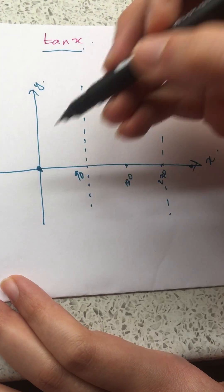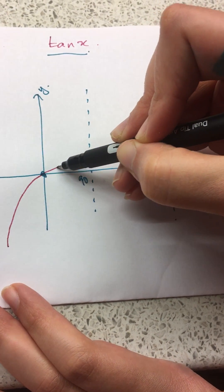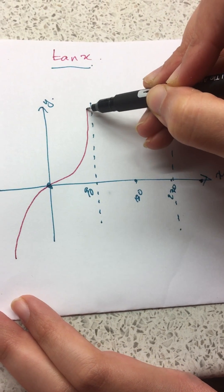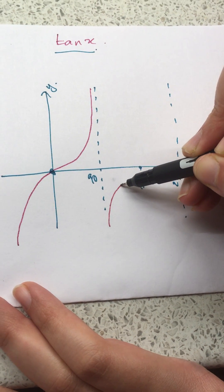And it looks like this. It goes close to the line, never touches it. It does the same with 180, so close to the line at 90, but doesn't touch it.